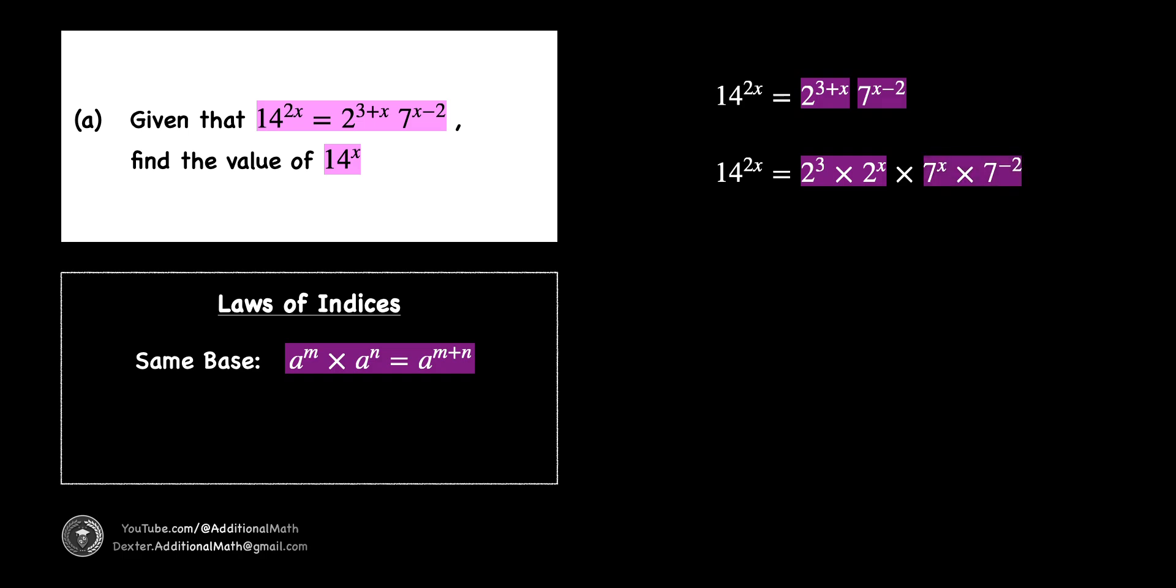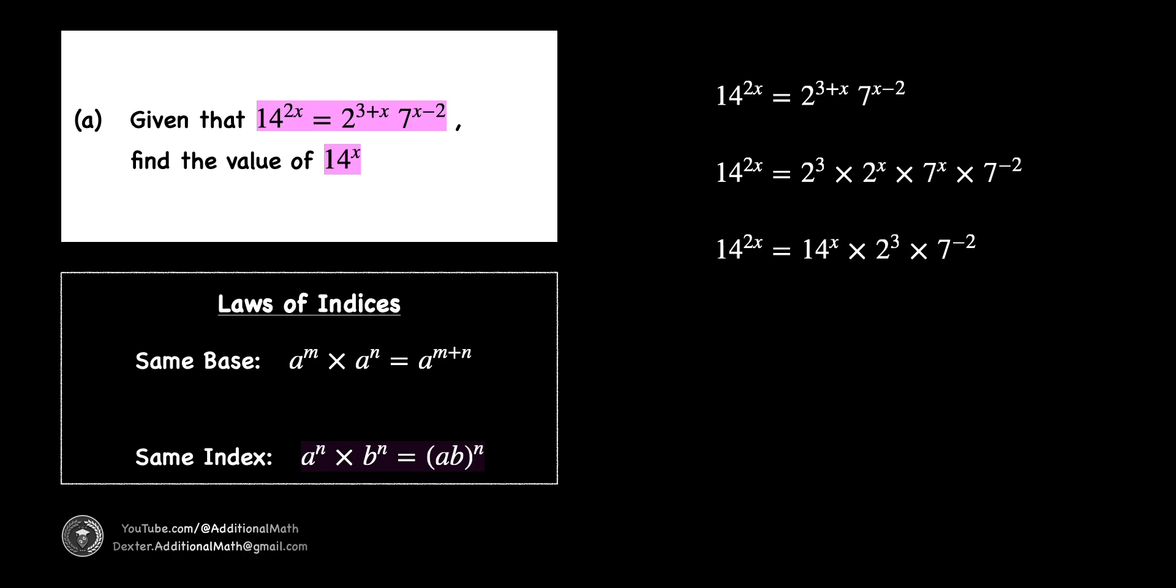Likewise, 7 to the power of x minus 2 can be written as 7 to the power of x multiplied by 7 to the power of negative 2. Next, applying the same index law, where a to the power of n times b to the power of n equals the product of ab to the power of n. We can simplify the product of 2 to the power of x and 7 to the power of x to be 14 to the power of x.